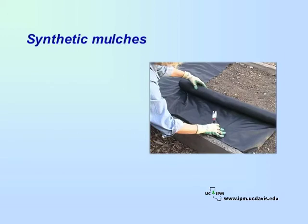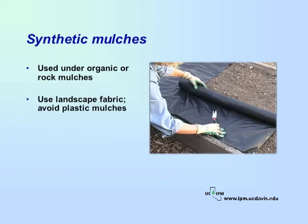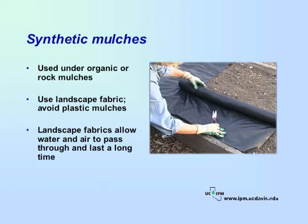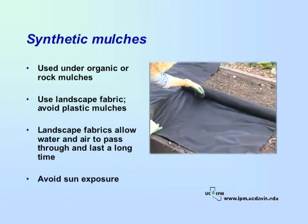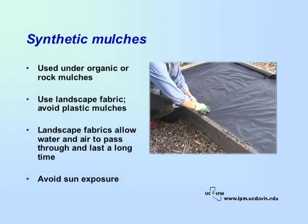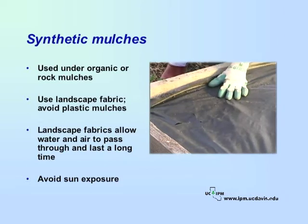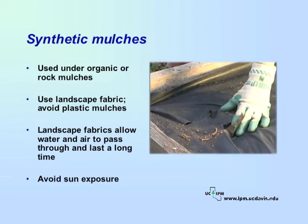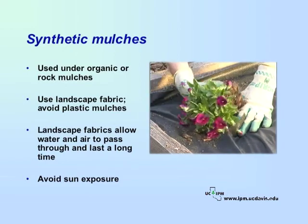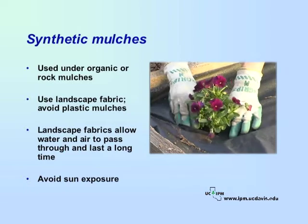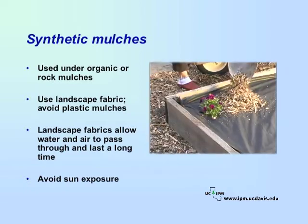Plastics and barrier fabrics are two types of synthetic mulches used under organic or rock mulches. Use landscape fabric and avoid the use of plastic mulches. Unlike plastics, landscape fabrics allow water and air to pass through and last a long time, but should not be exposed to the sun. To install, put the fabric down with U-shaped nails and be sure to overlap the edges. Cut an X in the fabric and dig a planting hole. Avoid leaving the soil from the planting hole on top of the fabric as this could put weed seeds above the material. Place the plant into the hole and cover the fabric with a shallow mulch layer about 1 inch deep.